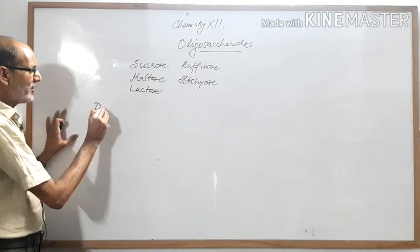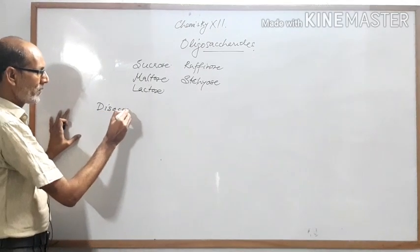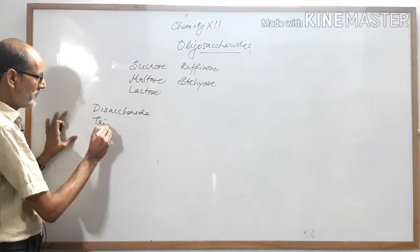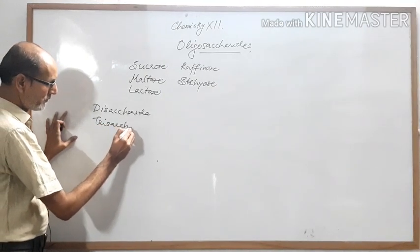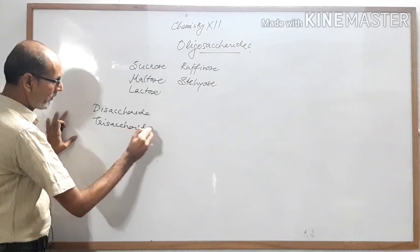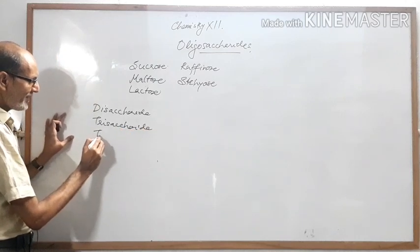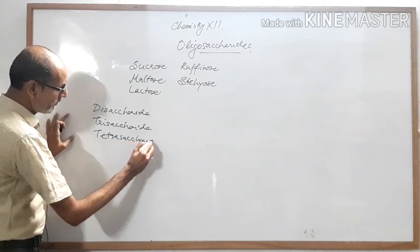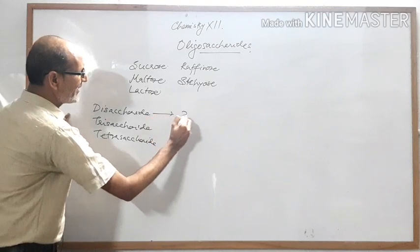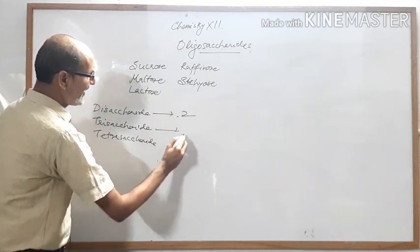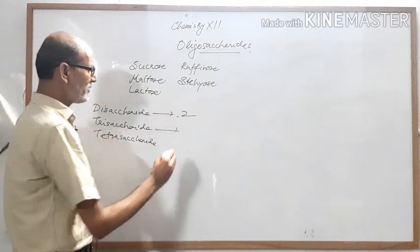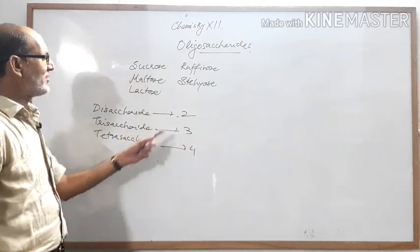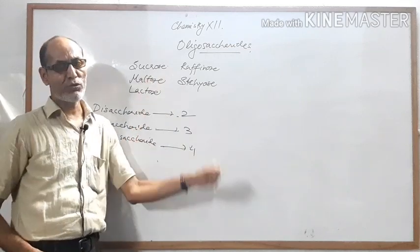The three varieties of oligosaccharides are disaccharides, trisaccharides, and tetrasaccharides. Disaccharides means two monosaccharides; trisaccharides means three monosaccharides; and tetra means four. The disaccharides are sucrose, maltose, and lactose.